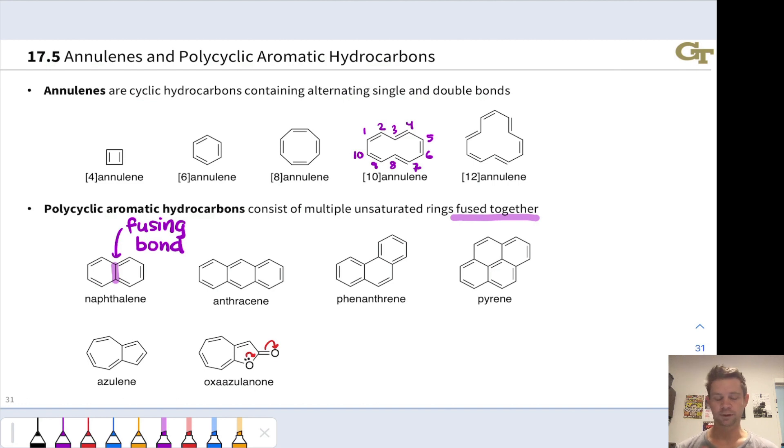But don't forget that heteroatoms can participate in pi systems as well. An alternative resonance form of this molecule, involving pushing this lone pair on oxygen into a pi bond with the carbon next door, shows that there are 2, 4, 6, 8, 10 pi electrons in this resonance form, showing us that this molecule is in fact aromatic as a result of the ten pi electrons.